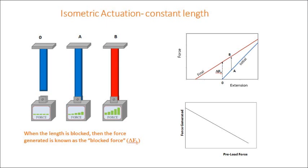Isometric actuation occurs at constant length. Again, we normally stretch the sample from zero to A and attach it at constant length to a force transducer, then stimulate the sample from A to B. The force generated is indicated by vertical transitions from the blue initial force extension curve to the red final force extension curve. If there's no pre-loading, the force generated is known as the blocked force, given the symbol delta F sub B. If we pre-load to A, the vertical line from A to B indicates the force generated. In this situation, with a decrease in stiffness on actuation as well as a contraction, the force generated decreases with increasing pre-load force.